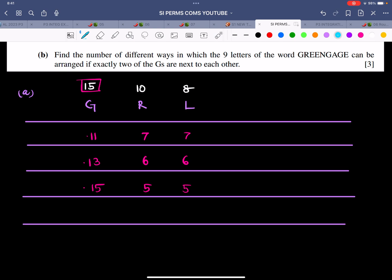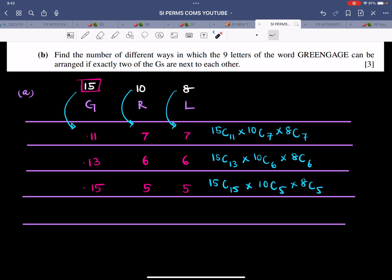We will select the geraniums from the geraniums, roses from the roses, and lilies from the lilies. So let me write 15C11 times 10C7 times 8C7. Similarly, 15C13 times 10C6 times 8C6. Similarly, 15C15 times 10C5 times 8C5. Let's have a double check: 15 and 11 is right, 10 and 7 is right, 8 and 7 is right. All good, all clear.